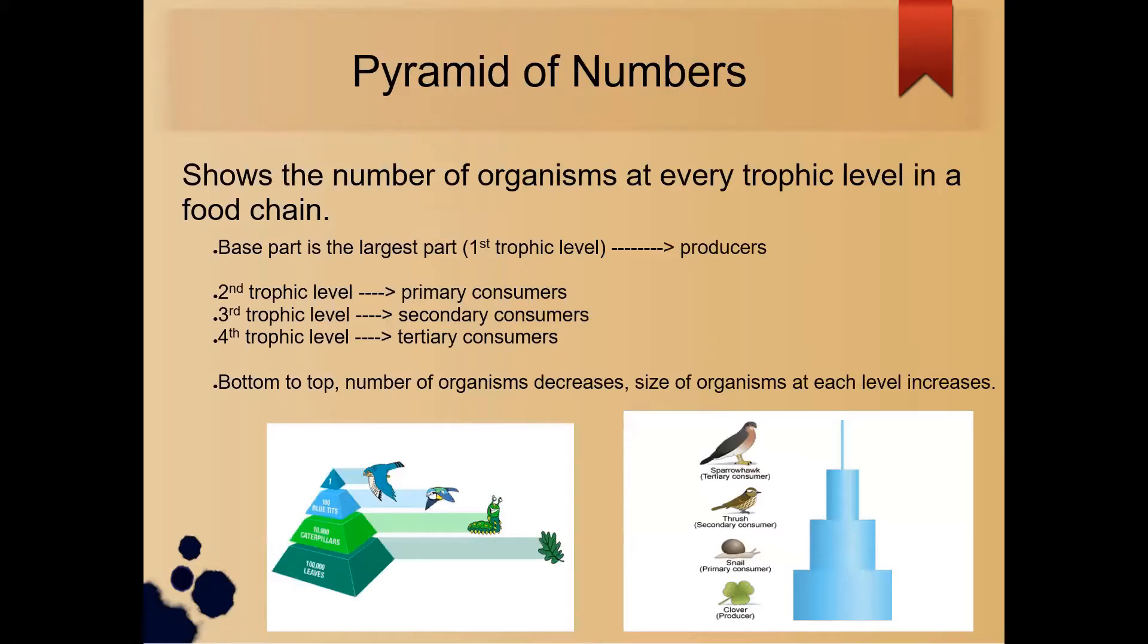I'm going to present pyramid of numbers. Pyramid of numbers is a diagram which shows the number of organisms at every trophic level in a food chain. There are four trophic levels. The first one is the first trophic level we call as producer, which is the base part and the largest part. The second trophic level